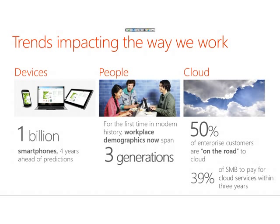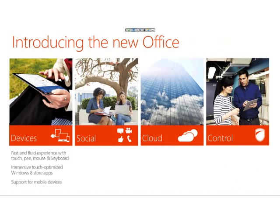This brings us to what the new Office is all about, and it's really summed up by four pillars: devices, social, cloud, and control. On devices, we are really trying to create a great experience for the new Office on all sorts of devices. Of course, Office is great with mouse and keyboard as we've always been. But we are also taking touch, stylus, pen, and ink into account — what experiences for productivity look like on a touch-first device. You will see some of those features play into the demo I'll be doing.